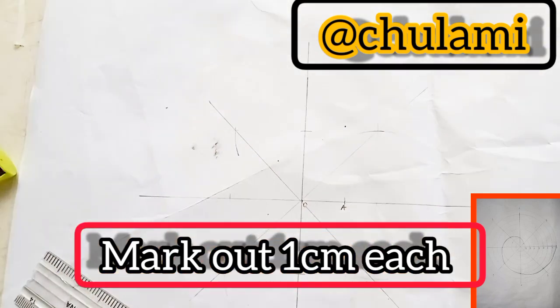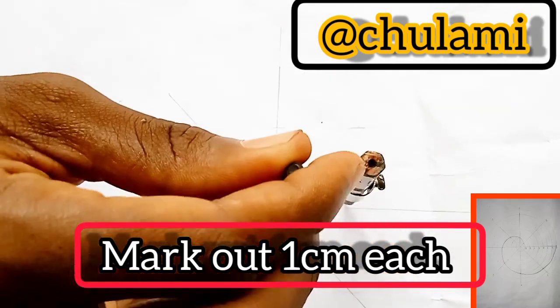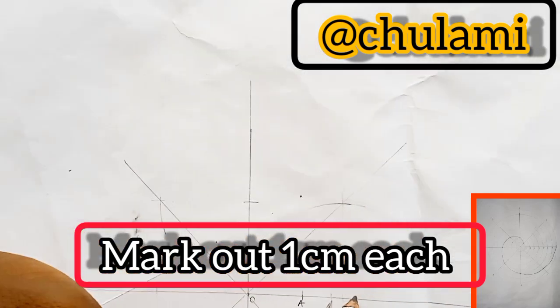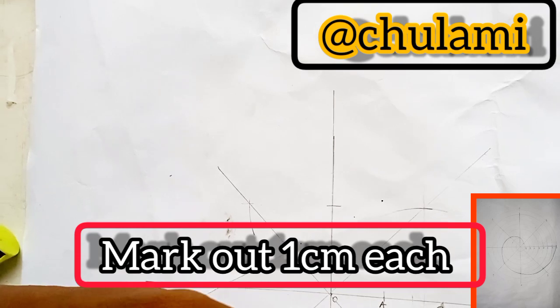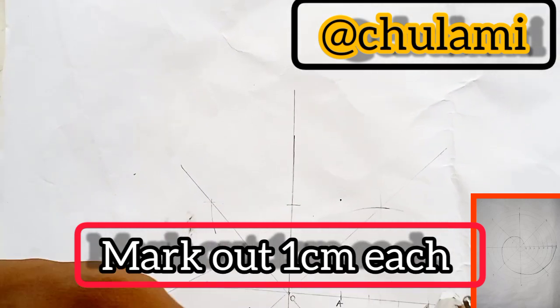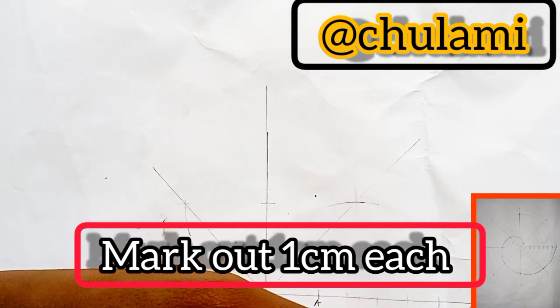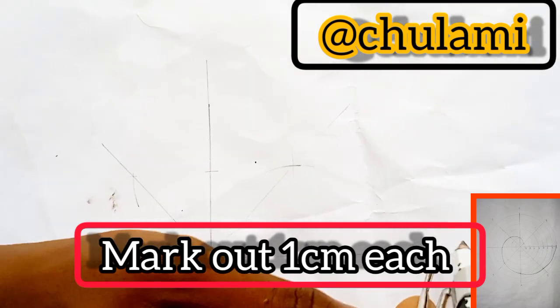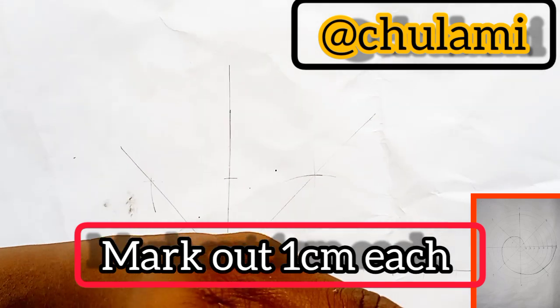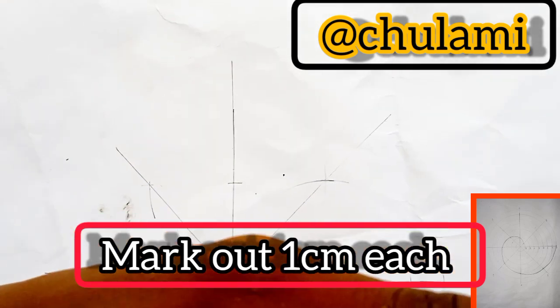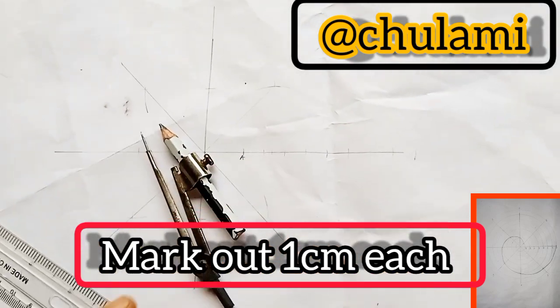So we measured 1cm. And then from point A, make out 8 divisions. 1, 2, 3, 4, 5, 6, 7, 8. I'm just going to extend this our line. So we'll do that and then we'll extend our line.